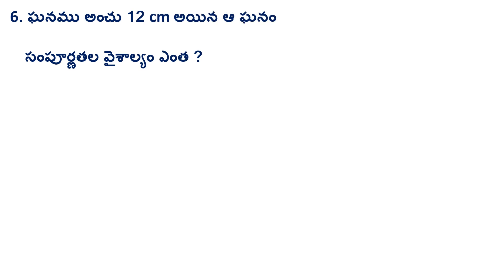Sixth problem: side (ganam) is 12 centimeters. We need to find the total surface area (sampurna thalavaishalem). The formula is 6a², and a = 12 cm.